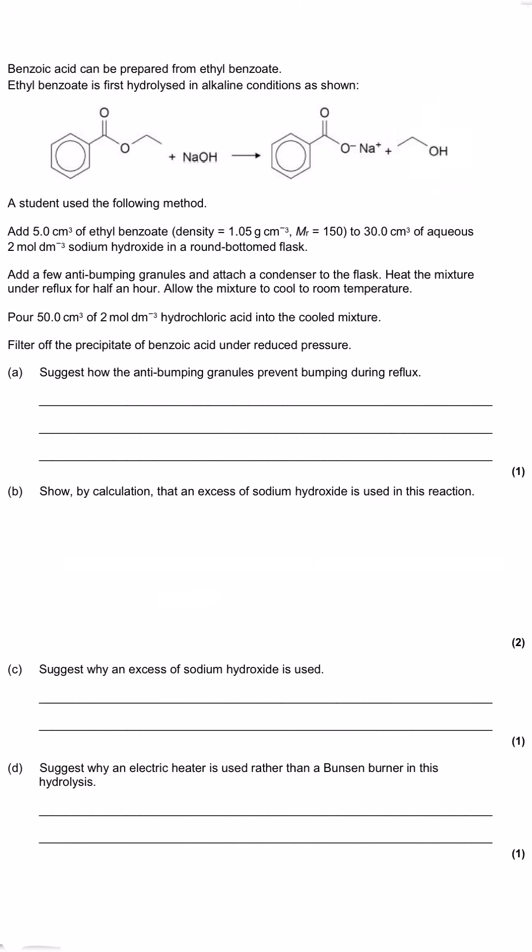In this question we're asked to look at the synthesis of benzoic acid which is made from ethyl benzoate. The first stage is where the ethyl benzoate is hydrolyzed in alkaline conditions with sodium hydroxide. We're given data about the masses and volumes of the different reagents. It's refluxed for an hour with anti-bumping granules and a condenser attached vertically, then allowed to cool. They pour hydrochloric acid into the cooled mixture and filter off the benzoic acid that precipitates under reduced pressure.